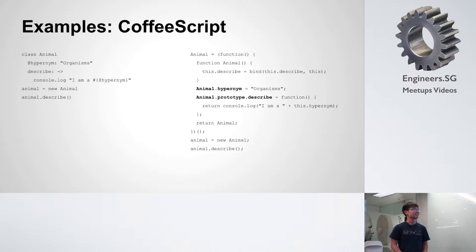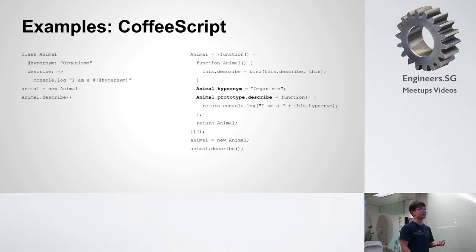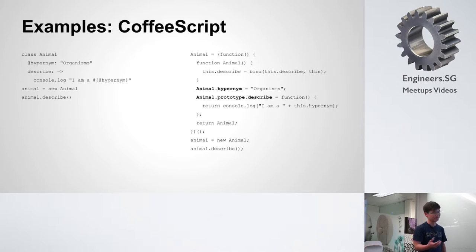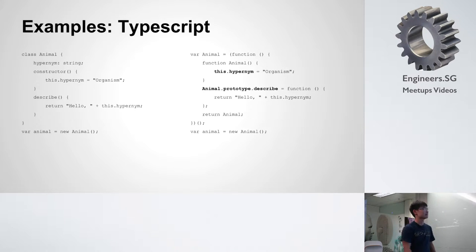I also looked at type-based derivatives of JavaScript. The first one that came out was CoffeeScript. On the left is what you write in CoffeeScript, and a transpiler converts it to JavaScript on the right. We can see the same pattern: defining an animal, giving it a property called "hypernym," a function called "describe," and seeing how the transpiler converts it — "animal.prototype.describe" for the method, and "animal.hypernym" for the property. I also looked at TypeScript — it's the same thing. This gave me confirmation I was on the right track.